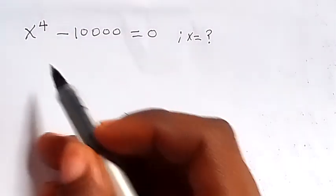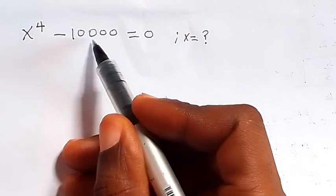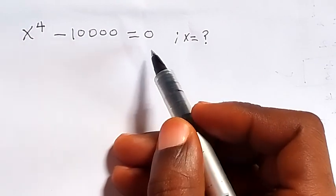Hello, how to solve this problem: x raised to power 4 minus 10,000 equals 0.